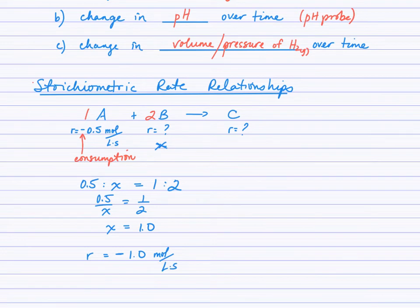What about C? We could call that Y and set it up. So 0.5 to Y will equal, as you can see, the coefficient is 1 to 1. I'll work it out just so we can see the math of that, but cross multiply here, and Y will be equal to 0.5. So the rate I'll interpret then as positive, 0.5 moles per liter second.